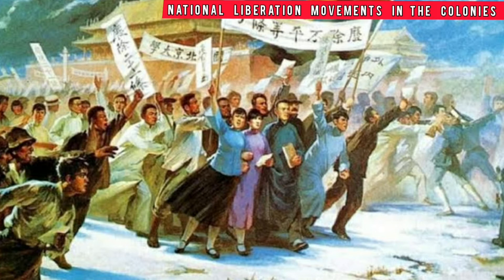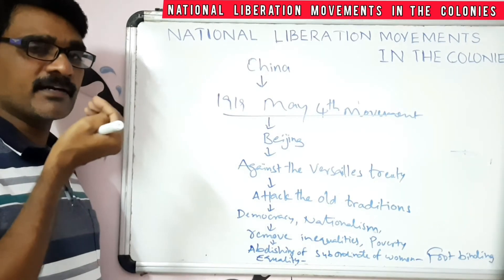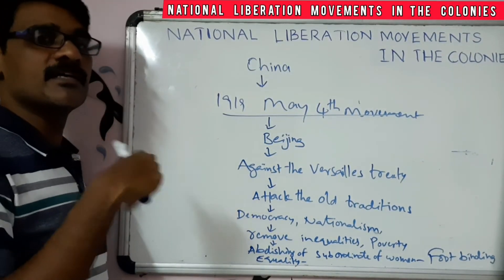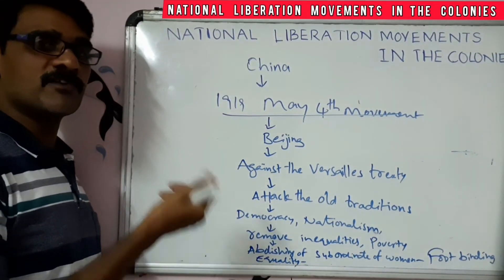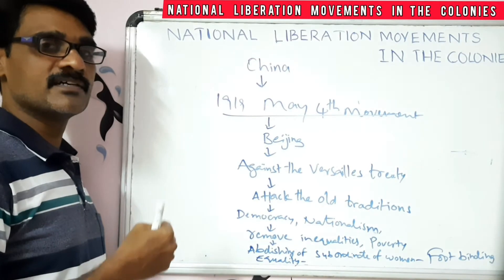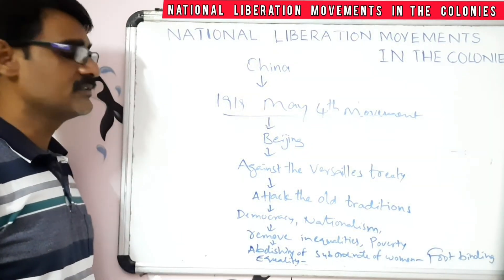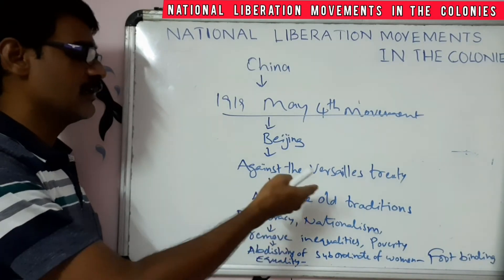The May 4th movement was demonstrated in Beijing by the people against the Versailles Treaty. They protested because even though China was in the victorious group after the First World War, they did not get back the territories which were occupied by Japan during the war. After the First World War they did not get those lands back, so the people were unhappy and demonstrated against the Versailles Treaty.